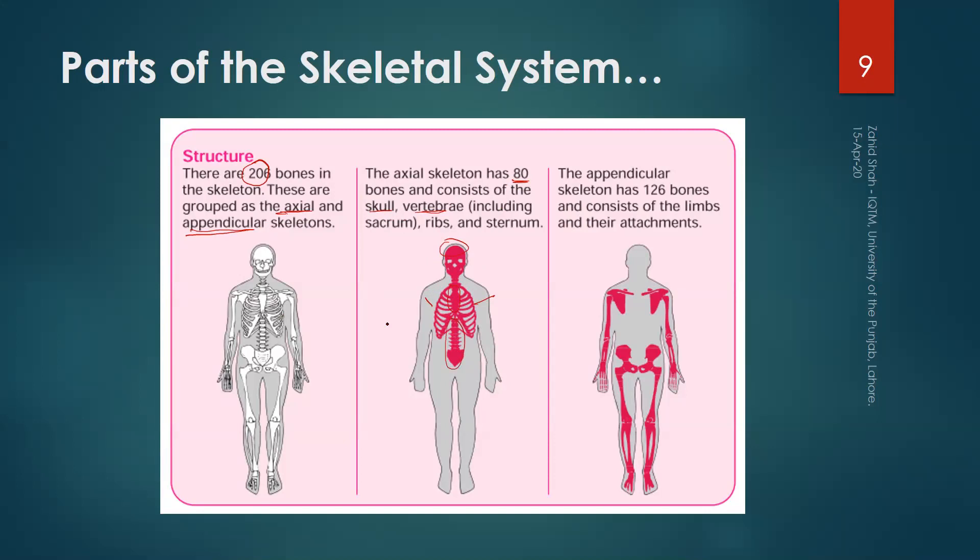The appendicular skeleton has the remaining 126 bones and consists of the limbs and their attachments—your shoulder blade, collarbone, upper extremities, lower extremities, and pelvis.